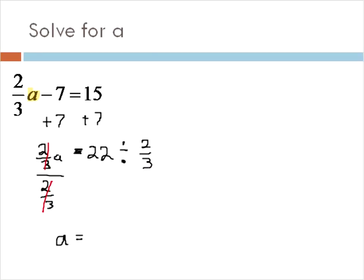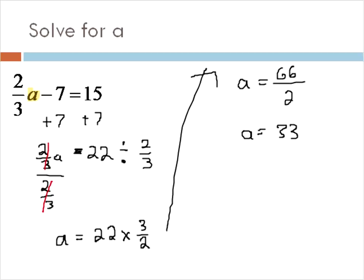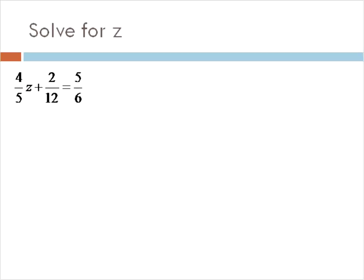We have a left by itself. And we're going to multiply by the reciprocal. So 22 times 3 over 2. And then solve for that equation. A is equal to 22 times 3 is 66, 66 divided by 2 equals 33. And if we take that 33, we could plug it back into this equation. 33 times 2 is 66 divided by 3 is 22 minus 7 is 15. So we can check our work by plugging our answer back into the original equation. So that would be our correct answer. A is equal to 33.